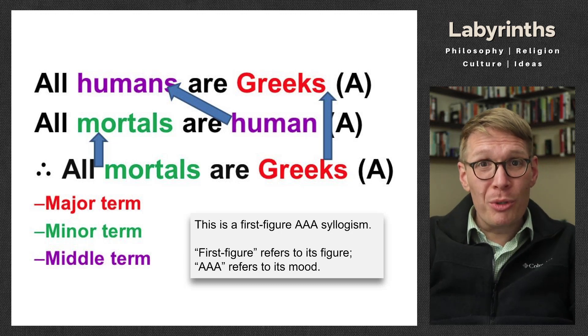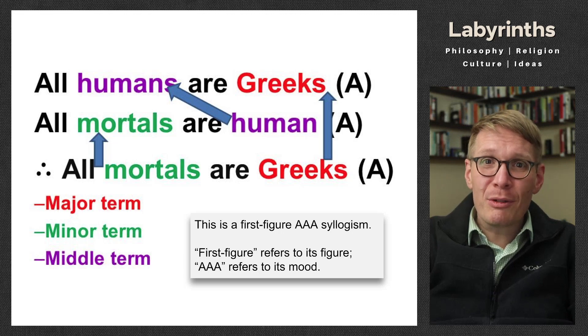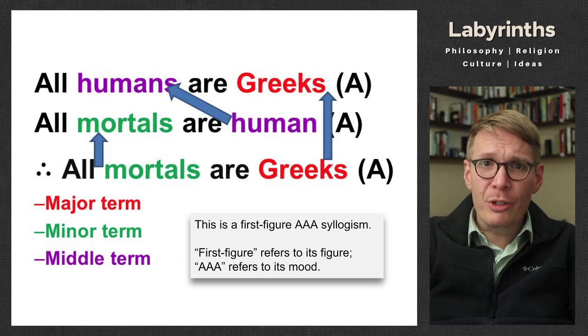So now we know how categorical syllogisms are put together and some different ways to identify their structure and form. Next time, we'll be looking at assessing the validity of categorical syllogisms and try to understand how they can go wrong in terms of their validity.